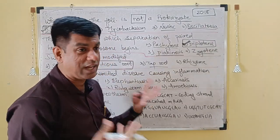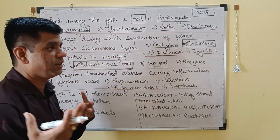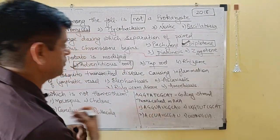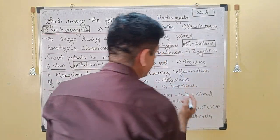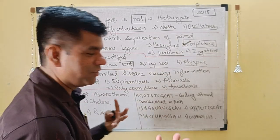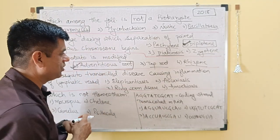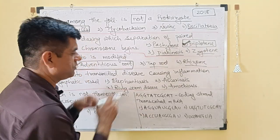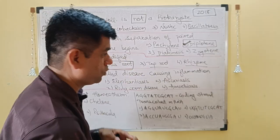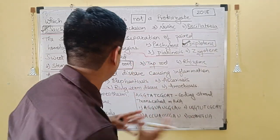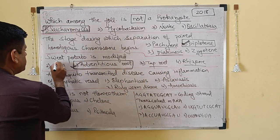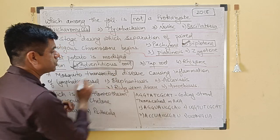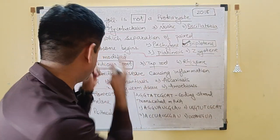It's not a taproot, because your carrot, radish, turnip, and beetroot — those are taproots which are modified for storage. Rhizome, obviously not — you have your adrak, what you call ginger, then turmeric and all that stuff, that comes under rhizome. Sweet potato is the modification of — a modified adventitious root. Remember that.